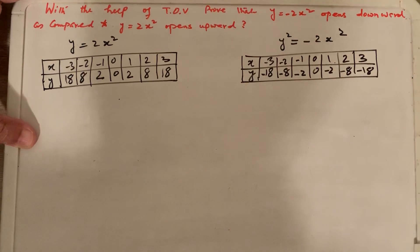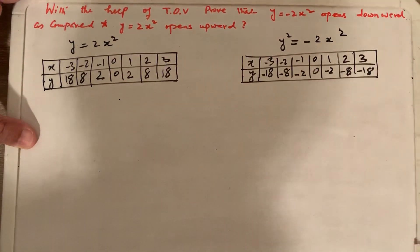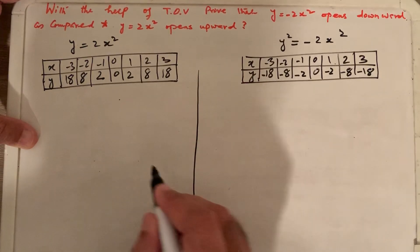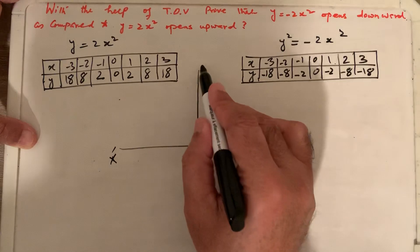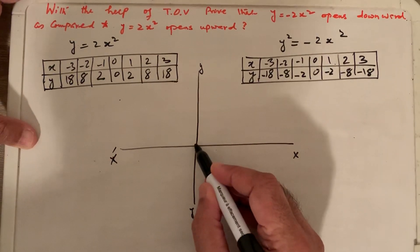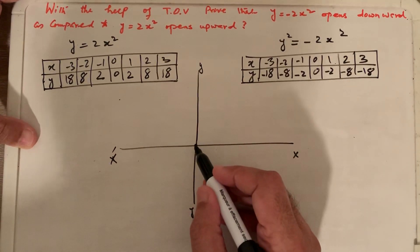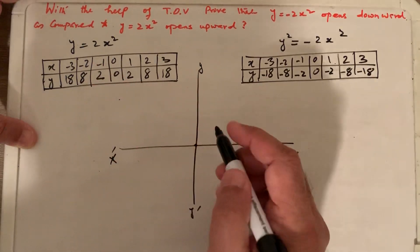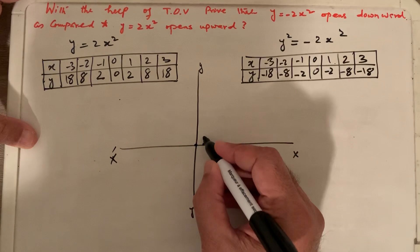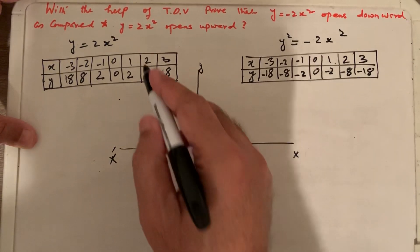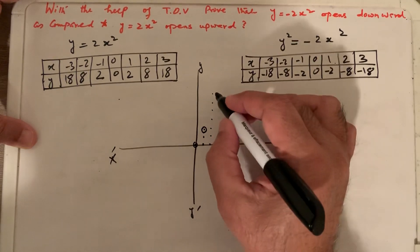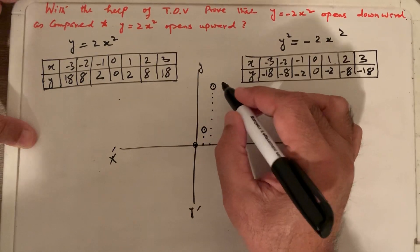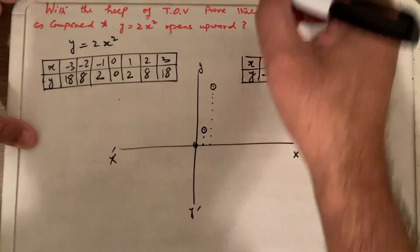Now with these tables of values, we prove that y equals minus 2x squared opens downward compared to y equals 2x squared which opens upward. I'll draw a rough graph. On the coordinate plane, 0,0 is the point for both functions. Plotting y equals 2x squared: at x equals 1, y equals 2; at x equals 2, y equals 8 — counting up 1, 2, 3, 4, 5, 6, 7, 8.